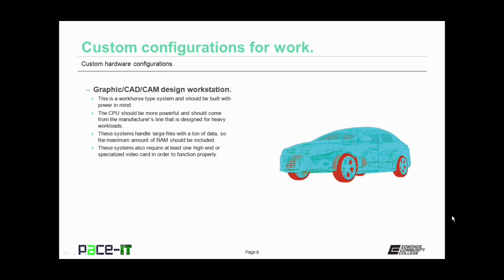Now let's move on to a graphic, computer-aided design, or computer-aided manufacturing workstation. This is a workhorse type system and should be built with power in mind. The processor should be more powerful and should come from the OEM's line designed for heavy workloads — they do have lines designed for workstations. These systems handle large files with a ton of data, so the maximum amount of RAM should be included.